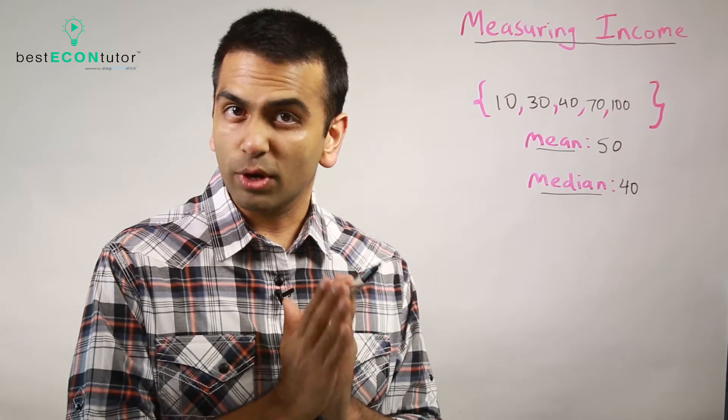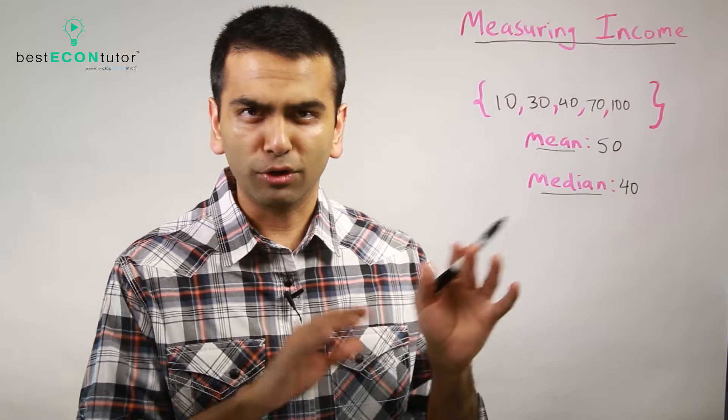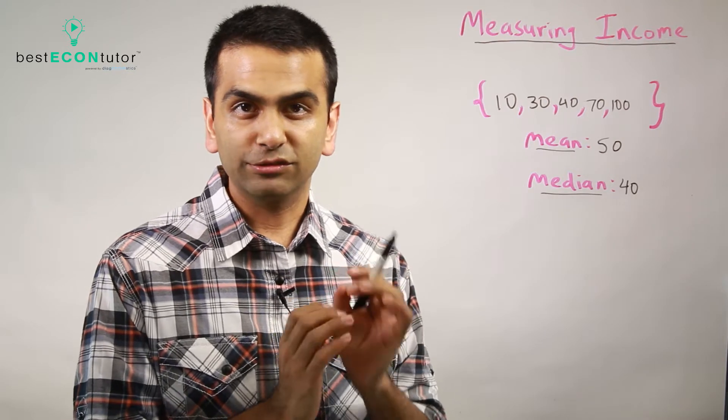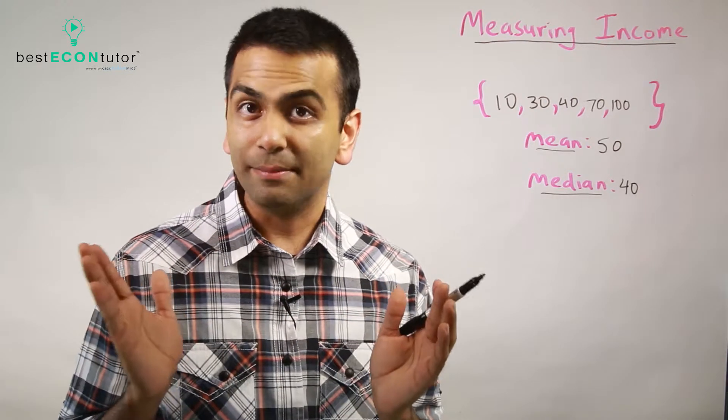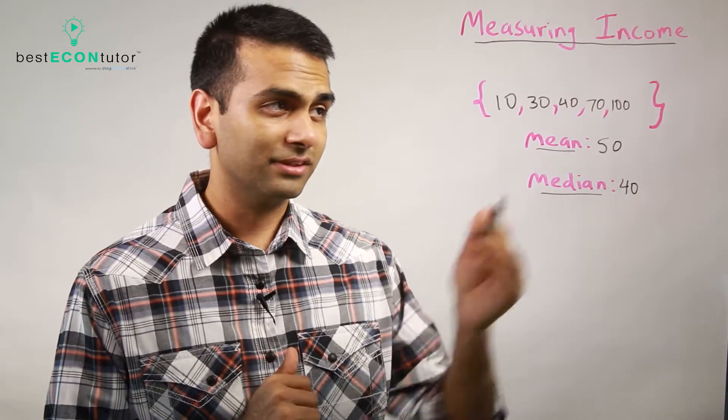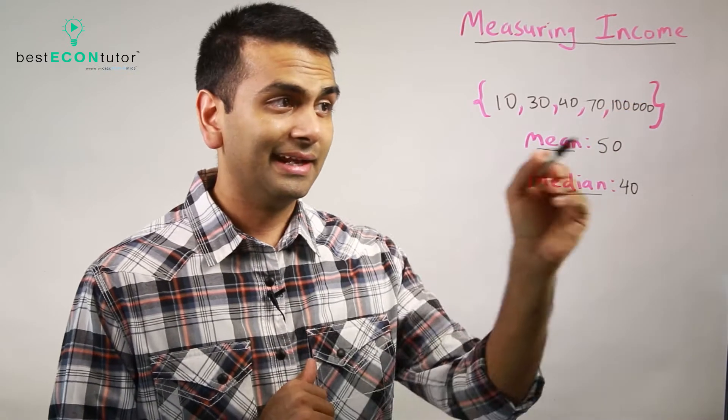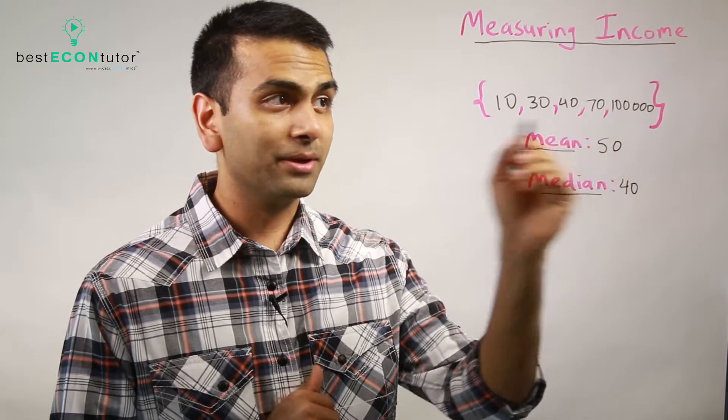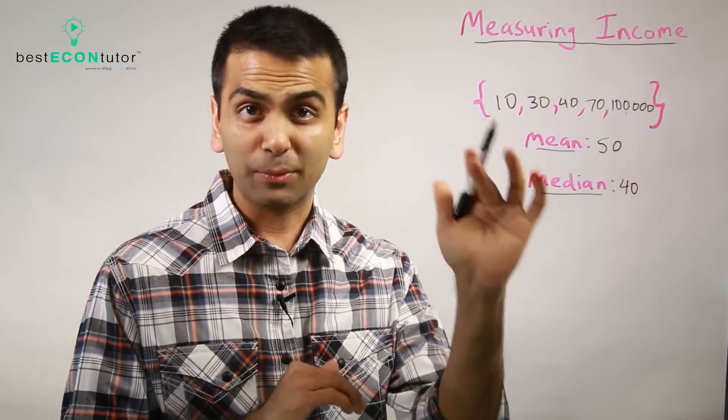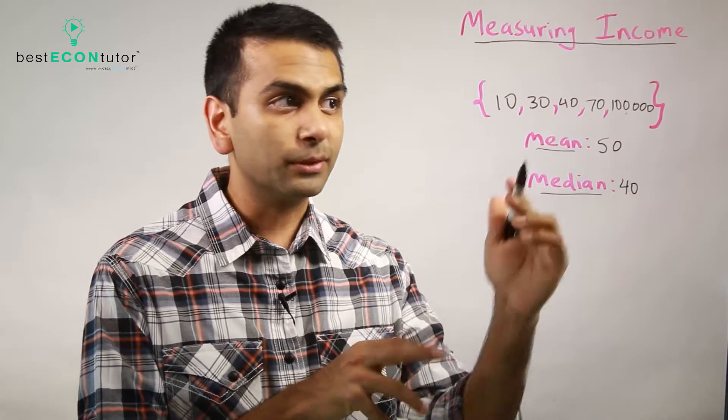Now, why might you want to use one over the other? They have pros and cons. The mean is easier to find as far as programming it into a computer or something, but the median is not influenced by outliers. Here's what that means. Let's say we happen to get Bill Gates in our sample. Let's say this highest income was not $100,000, but some really big number. Now, the mean, when you add all those up and divide it by five, it's going to be huge. That's still going to be in the thousand-something, when clearly that's not what's going on with most of the people in our sample, right? So the mean can kind of be influenced by that outlier.